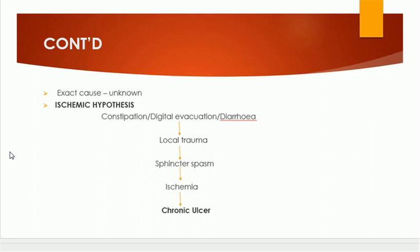Sphincter spasm results in ischemia of that area, which results in a breakdown of the anoderm and ultimately can result in a chronic ulcer. This is how ischemia occurs and leads to anal fissure. This is the ischemic hypothesis.